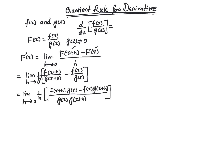If I simplify it a little bit, I combine these two terms and do the subtraction. Then you're going to get f of x plus h times g of x minus f of x times g of x plus h, all divided by g of x times g of x plus h.